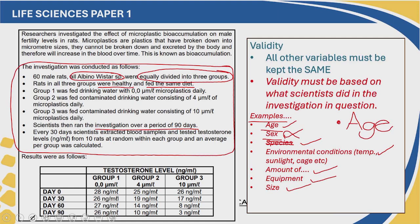Was temperature kept constant? The scientists did not state that they kept temperature constant in this case. But we also need to consider — will temperature affect fertility? Yes, temperature may affect fertility. So keeping the temperature the same would be another factor that would improve the validity of our investigation. What about sunlight? Sunlight was not kept constant, but will sunlight affect fertility? In this case, sunlight won't affect fertility, so it does not influence this investigation.